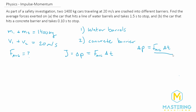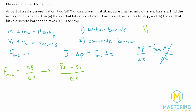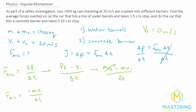They want us to find the average force. So if we isolate that by dividing both sides by the change in time, we get the average force equals the change in momentum over the change in time, which breaks down to P-final minus P-initial divided by the change in time. In this scenario, after the cars hit the water barrels or the concrete barrier, the final velocity is going to be zero meters per second. So momentum becomes mass times velocity-final minus mass times velocity-initial, and since the final velocity is zero, our equation simplifies to: F-average equals negative mass times the initial velocity divided by the change in time.